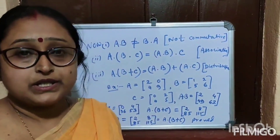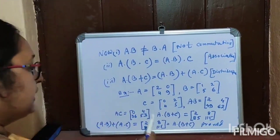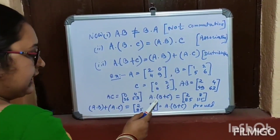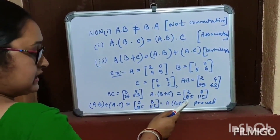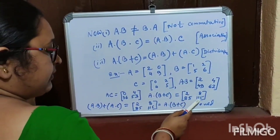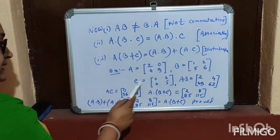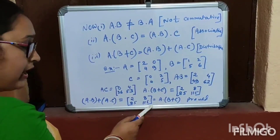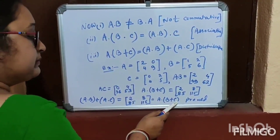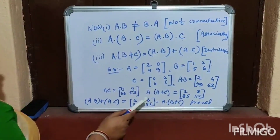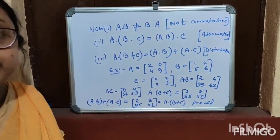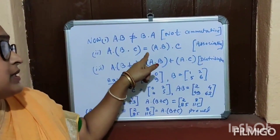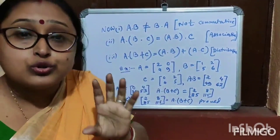Matrix multiplication is distributive. For example, given A, B, C: find A·(B+C) and A·B + A·C. A·(B+C) equals 2885 and 115. A·B + A·C also equals 2885 and 115. These two are equal. Hence matrix multiplication is distributive. So matrix multiplication is not commutative but associative and distributive law holds.